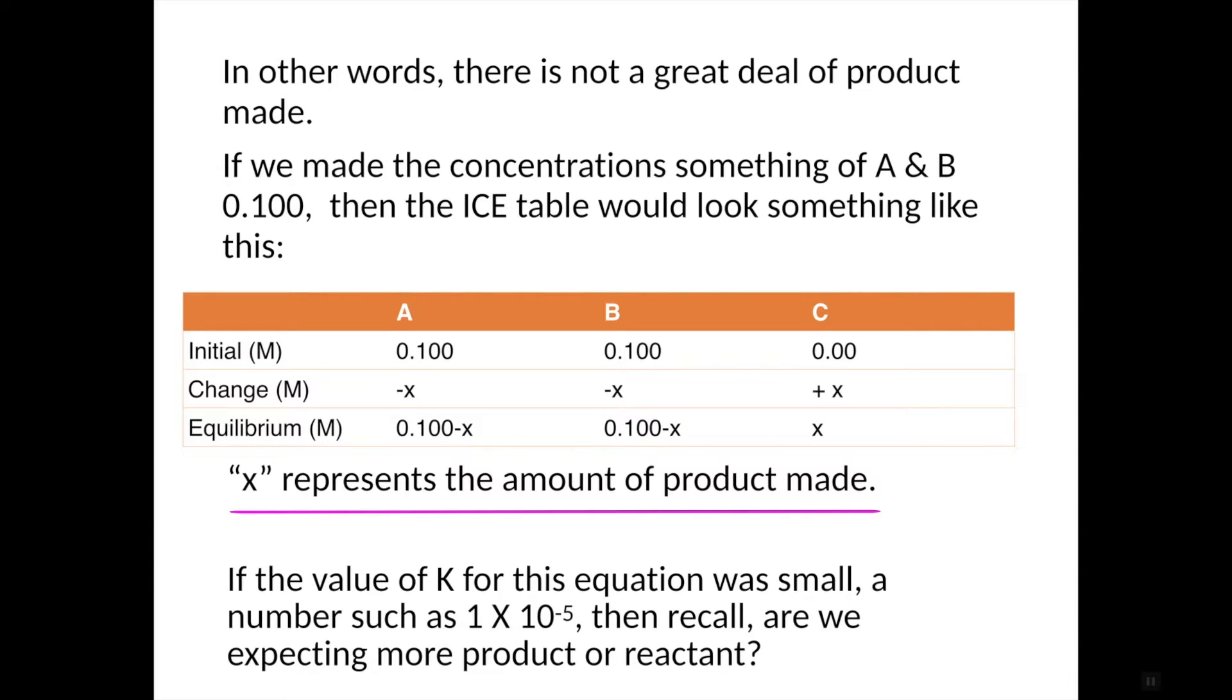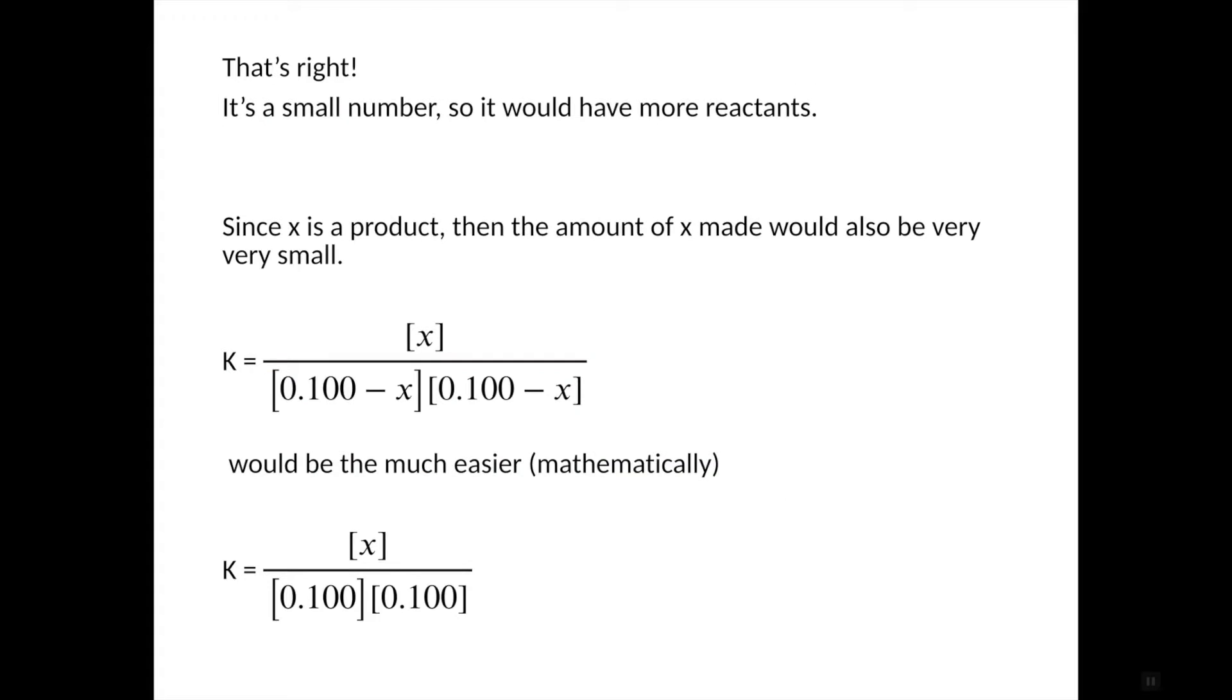If the product for this equation was small, a number that I'm bringing here like 1 times 10 to the negative 5, then what we are saying is, which one is it? Are we expecting more reactant or product? So I'm hoping that you're telling yourself that's more reactants. Since X is a product, then the amount of X made would also be very small. So that means the number, looking at our equilibrium equation as you can see here, the number that we subtract from 0.1 would be very small. And we can make an assumption that it has no impact and it's just 0.100.